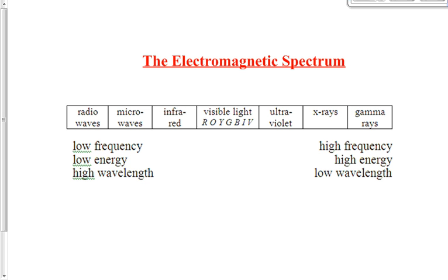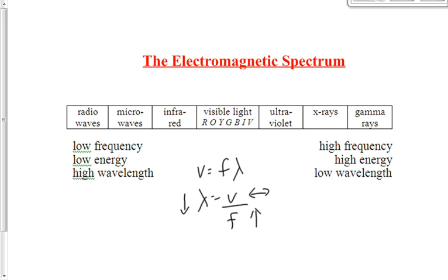As we go from left to right on the electromagnetic spectrum, frequency increases. Radio waves have a really low frequency and gamma rays have a really high frequency. Energy follows the same trend. Wavelength is the opposite — as frequency goes up, wavelength goes down. That's from the equation v = f × λ, or rearranged: λ = v/f. Since v is constant at 3 × 10⁸ m/s, if frequency goes up, wavelength goes down.